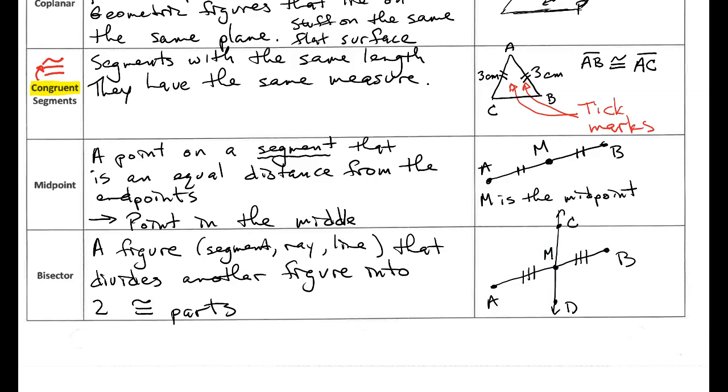And I can see here that line CD bisects segment AB because it divides the segment into two congruent segments.